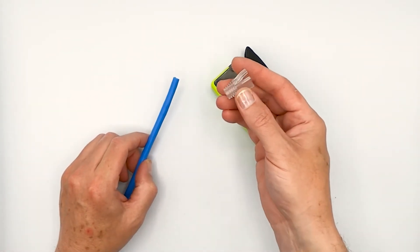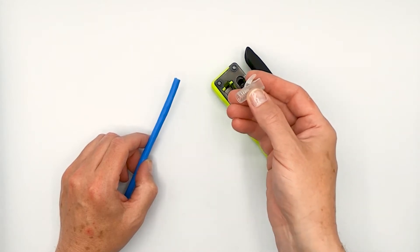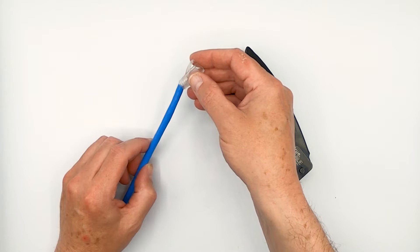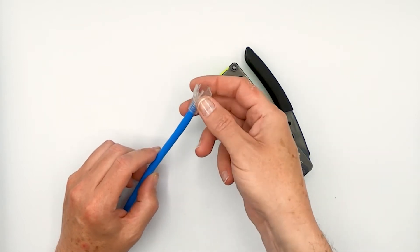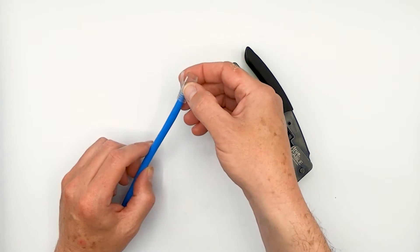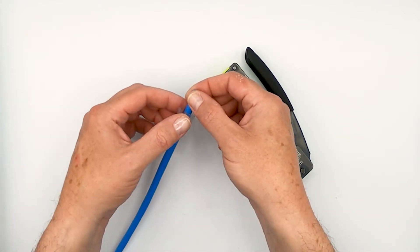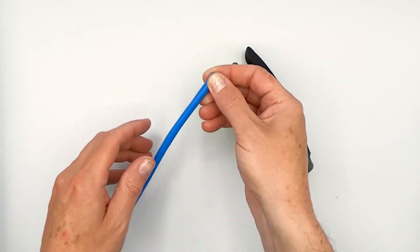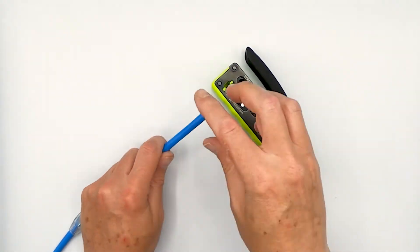we're going to use a slip-on boot for adding some additional strain relief. The first thing you're going to do is you have to slide the strain relief boot down first. No matter what variation you're working with, this has to go first. So we use our medium slip-on boot for this particular Cat 6A riser unshielded cable, and it slides down relatively easily. Just get it out of your way for the time being. It will come back to it later.